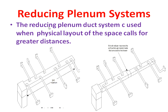This is the diagram of the reducing plenum system. The main advantage of the reducing plenum system is that we can increase the main duct length beyond 24 feet without decreasing or increasing the pressure in the branch ducts which are close to the AHU.